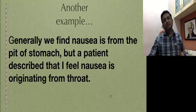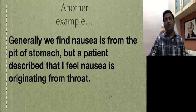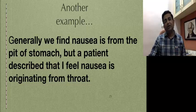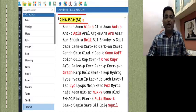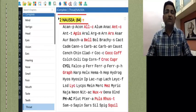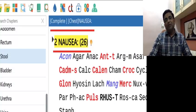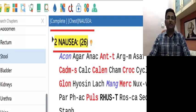Generally we find nausea is from the pit of the stomach. But a patient described that she feels nausea originating from the throat. So when you know such rubrics exist in the repertory, you can use it when the patient gives that exact expression. You find it in the throat section: Nausea from throat. The same way you find Nausea from chest. So from next time, once you know this type of rubric, any patient of nausea — your case taking becomes more precise.